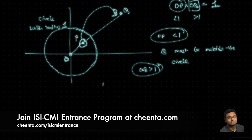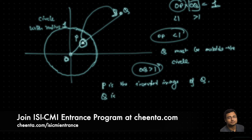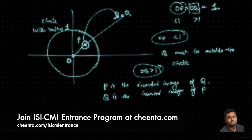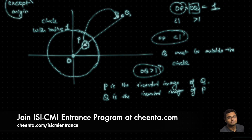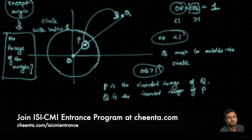P is the inverted image of Q, and Q is the inverted image of P — Q is sent to P, P is sent to Q. Now we understand what inversion is: it's a map that sends every point in the plane except the origin. Can anyone tell me why the origin has no image under inversion? You can think about it and tell me in the comments.